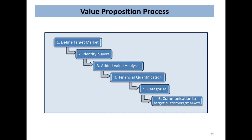The value proposition process has six discrete steps. Step one: define your target market — you've already done that with the matrix. Step two: identify the buyers. Step three: added value analysis. Step four: financial quantification — the crucial step. Step five: categorise the outcomes. Step six: communicate the value to your target customer. Step two — identifying buyers — involves mapping quantitatively the flow of goods and services from supplier through to end users. We are amazed how few companies actually do this, yet when we get them to do it, they always say it is one of the most valuable exercises they've ever done.